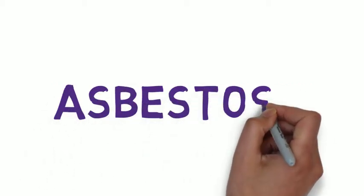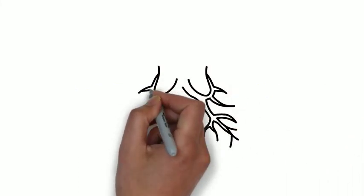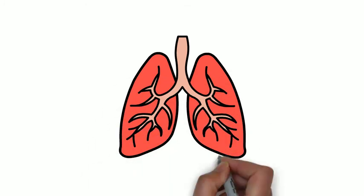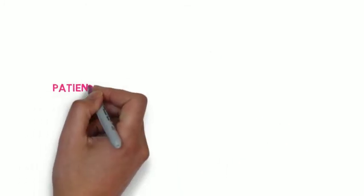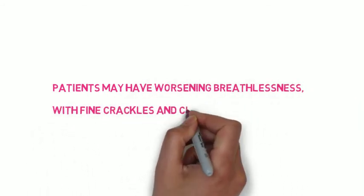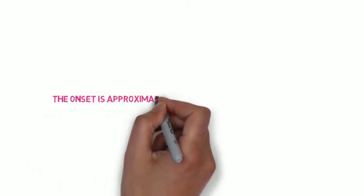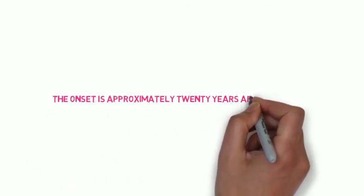Another ramification of asbestos is asbestosis. This typically affects the lower lobes of the lung, and a patient will be symptomatic if they have asbestosis. They will have worsening breathlessness, and on examination you may notice clubbing and fine crackles at the bases of the lung. The onset is approximately 20 years after exposure to asbestos.